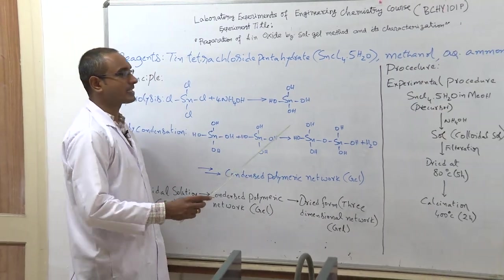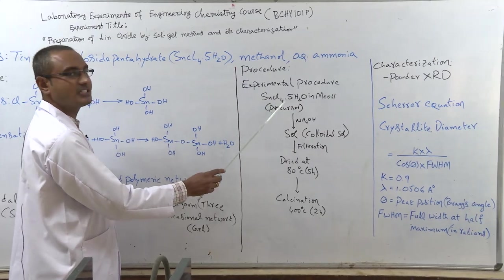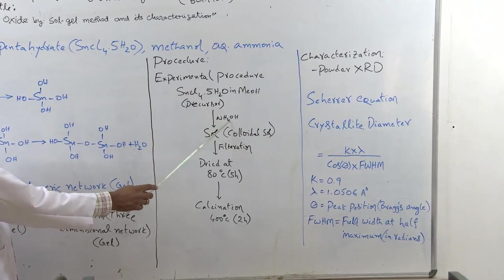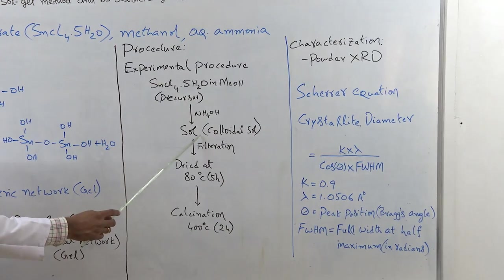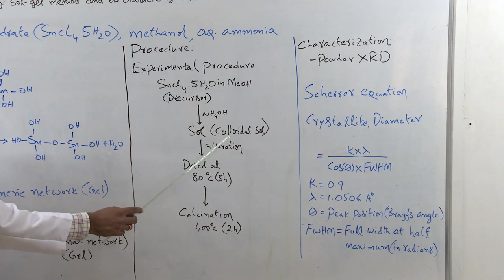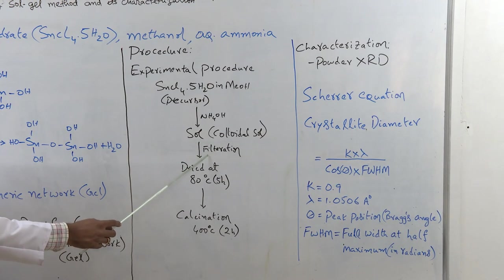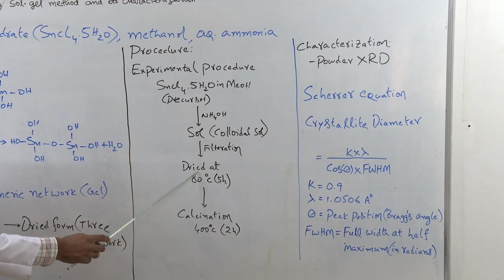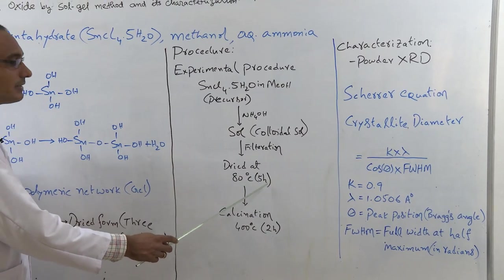And coming to the procedure part. So we are going to dissolve tin tetrachloride in methanol. And after that, we are going to add aqueous ammonia dropwise. It will form the sol colloidal solution. After that, this will be filtered using a Buchmann funnel fitted with Whatman filter paper.